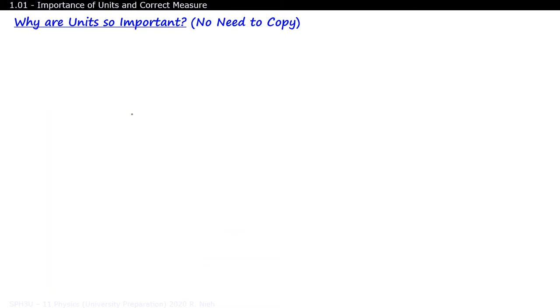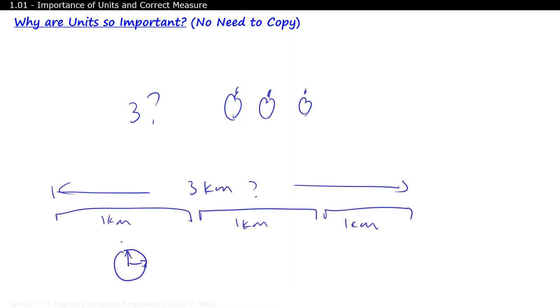So why are units so important in science? I mean, if I give you the number 3, what does it really mean? Three apples? Three kilometers? Three hours? Three by itself doesn't really bear any meaning on its own.